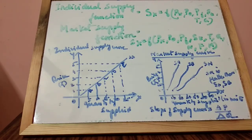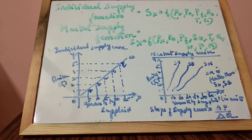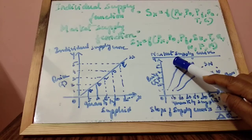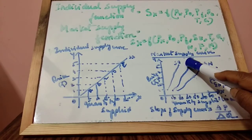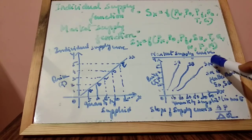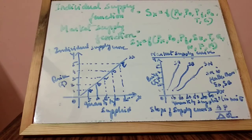Now we will see the market supply curve. In the market supply curve, you can find individual supply curves SA and SB for individual firms. SM is the market supply curve, obtained by the horizontal summation of individual supply curves.